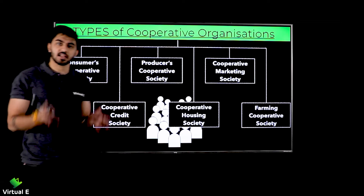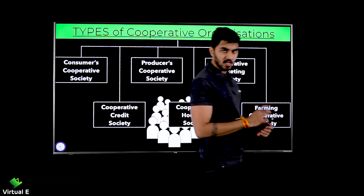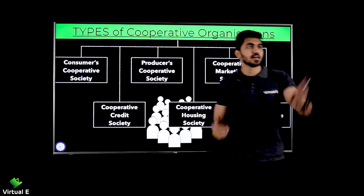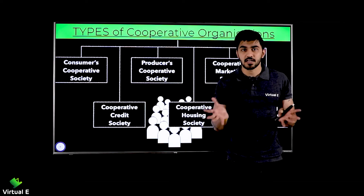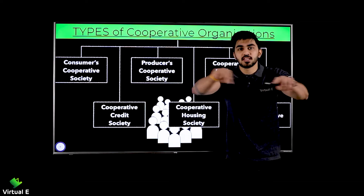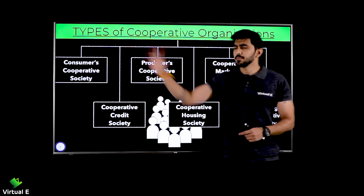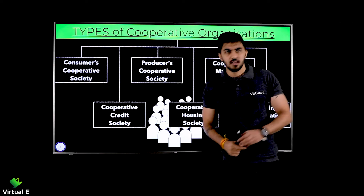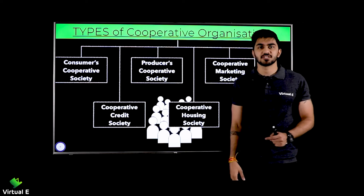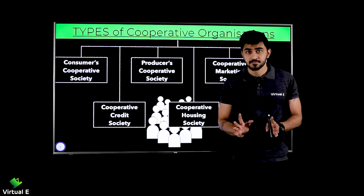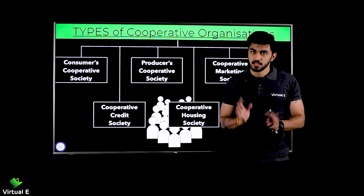Since these are low income group people, they come together and save their money. Someone contributes 10,000 rupees, someone 15,000, someone 5,000 — this way money accumulates. Now any member of this society who needs a loan at any time — for a wedding, to send someone abroad for studies, or for hospitalization expenses — that person can take a loan from this cooperative credit society.